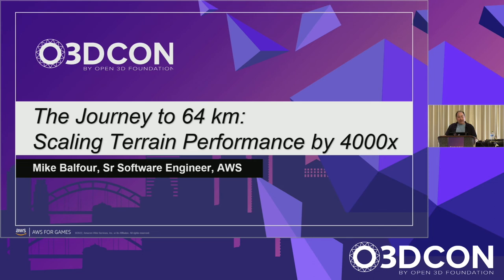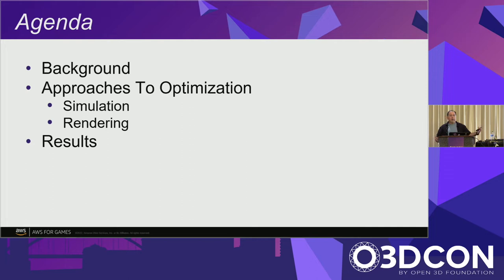I'm Mike Balfour, a senior software engineer at Amazon. The talk today is about our journey in optimizing terrain, and more generally a talk about the journey to optimizing in general. Over the next 30 minutes, I'm going to take you through the story of what we went through, where we started, the approaches that we took to optimizing the terrain system, and then finally, how far did we get? I had to write the title to this presentation several months ago with no idea what was going to happen, so it was pretty exciting.